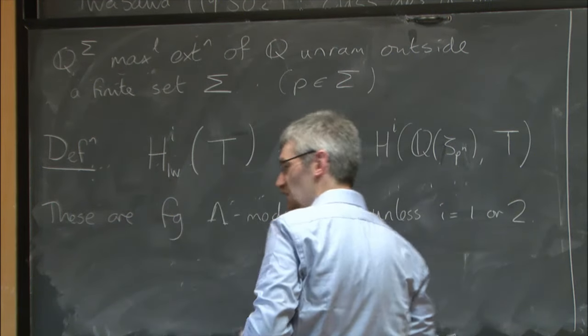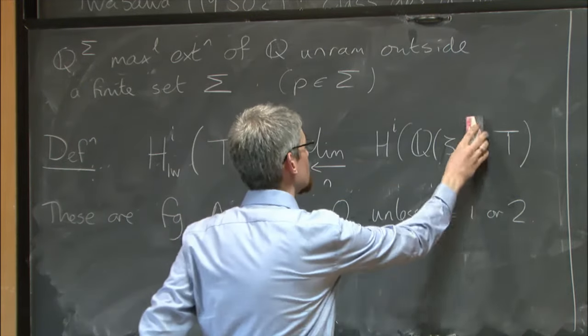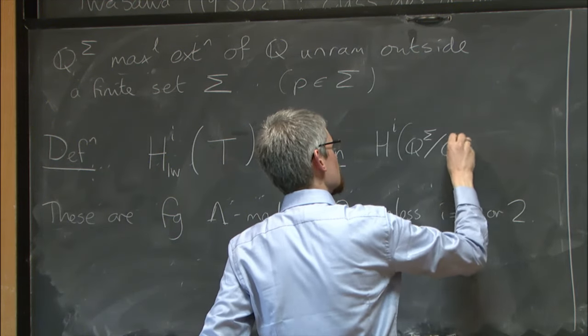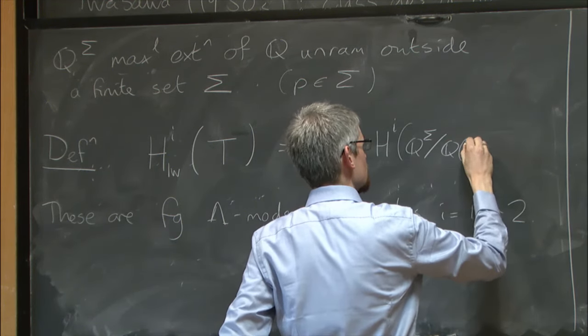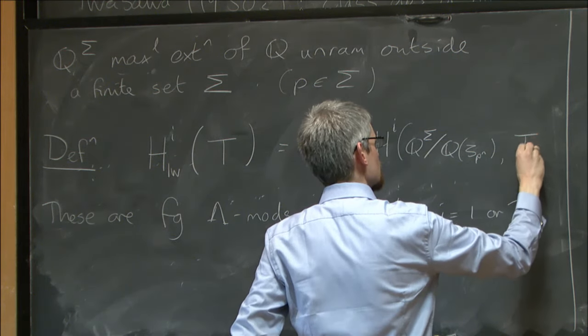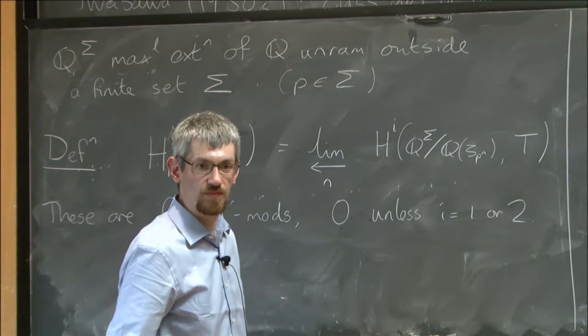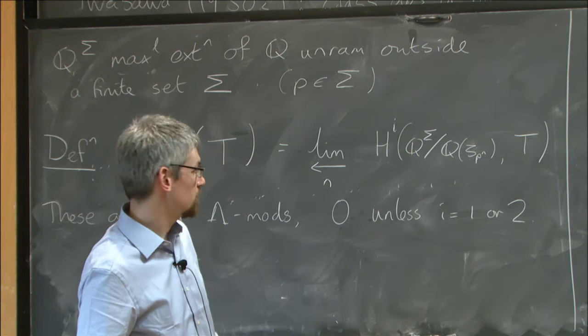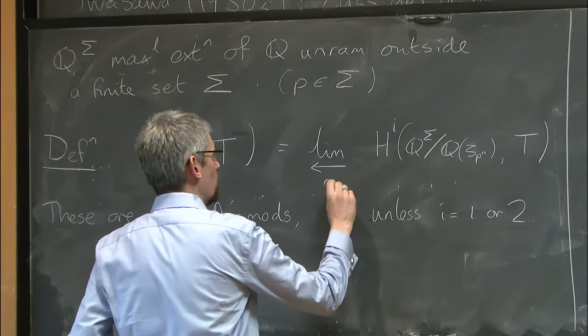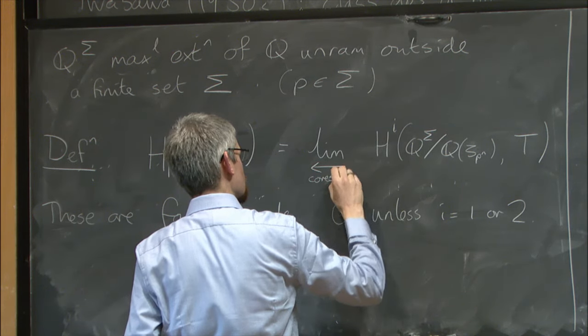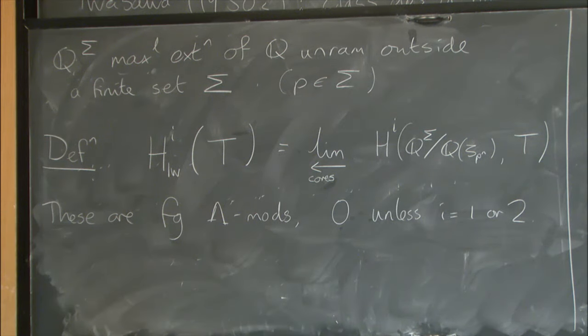And in fact they are only ever non-zero in two specific degrees, in degree one and two. I said it would become obvious in a moment why I made this ramification restriction and I forgot to say it. Yeah, otherwise these would not have been finitely generated because you would have all sorts of extra junk. Yes, so this is with respect to the norm map. There's a co-restriction map from n plus 1 to n and you take the inverse limit with respect to that.